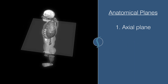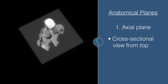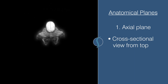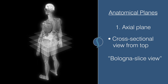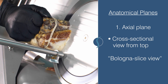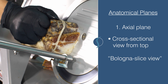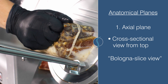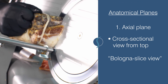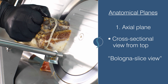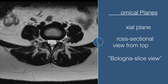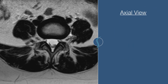The axial plane is a cross-sectional view from the top of the body. I like to call it the bologna slice view. If you've ever been to the deli counter, the bologna slice is placed into the slicer — this cross-sectional slice is similar to the axial view. As you can see on the screen, these are the axial views of the lumbar spine.